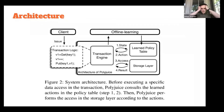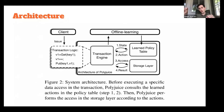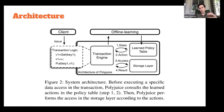The architecture of the system is somewhat simple. The Polyjuice database runs on a node, and there is a separate node that handles offline learning. The client sends requests to a transaction engine, which looks up in the learned policy table to find the set of actions that should apply for this transaction, performs access on the storage layer, gets the result, and ships it back to the client. Throughout this process, it's shipping transactions to the offline learning component, which keeps training and updating the learned policy table.